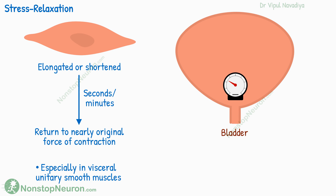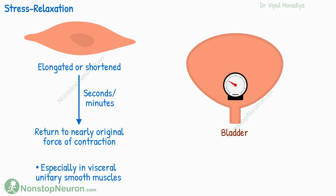Conversely, if there is a sudden decrease in bladder volume, initially the pressure would decrease, but within a few seconds to minutes, the pressure rises towards the original level. This is called reverse stress relaxation.